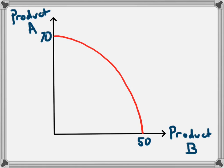In reality, they would like to operate somewhere on this curve and produce a mixture of those products, so that consumers can consume both. The economy might produce at a point X, where they're producing 60 of product A and 35 of product B.